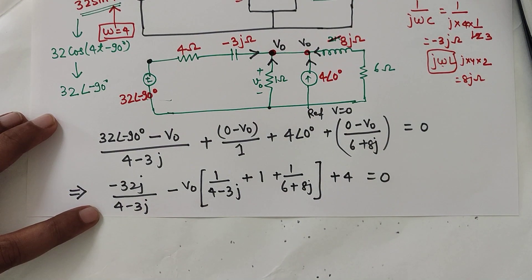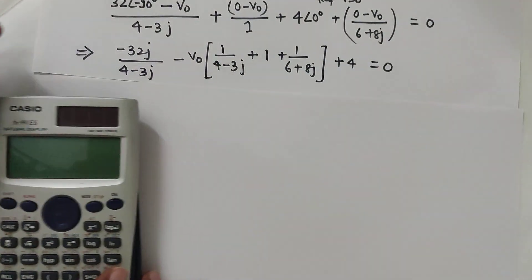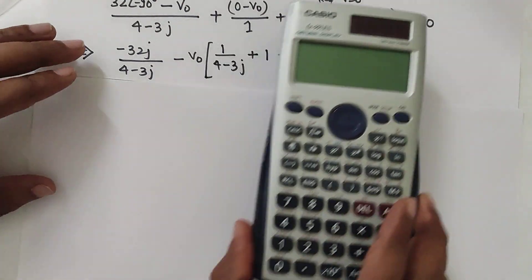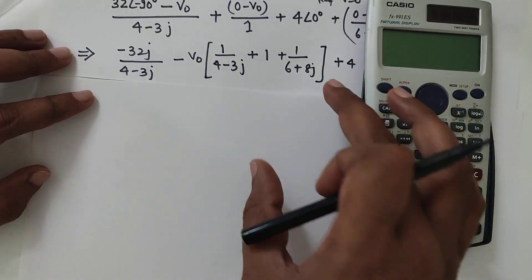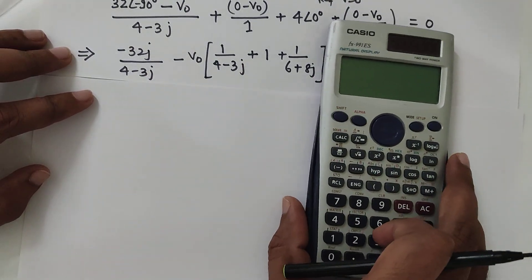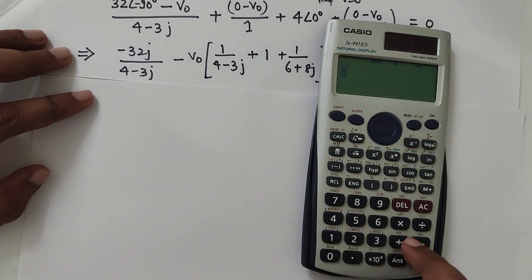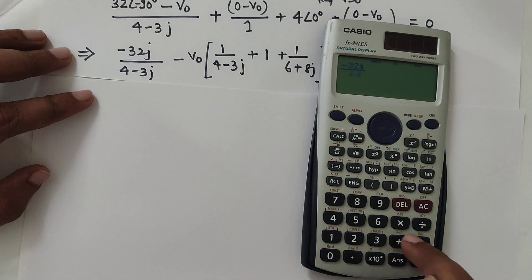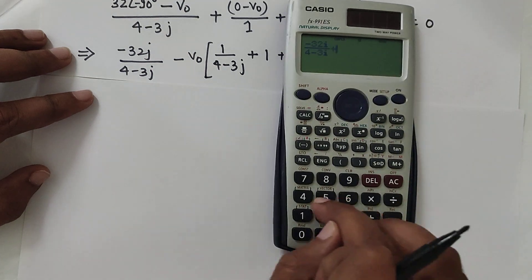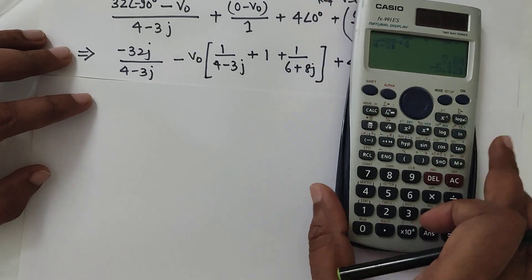Let's calculate this. So 1 by 1 we will calculate. We have the minus 32j by 4 minus 3j plus 4. Which is constant term. So let's calculate that first. First we have minus 32j divided by 4 minus 3j plus 4. This is equal to 7.84 minus 5.12j.